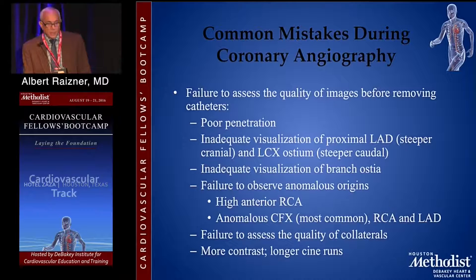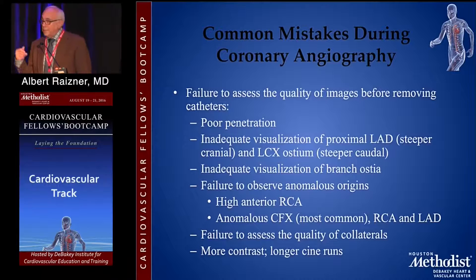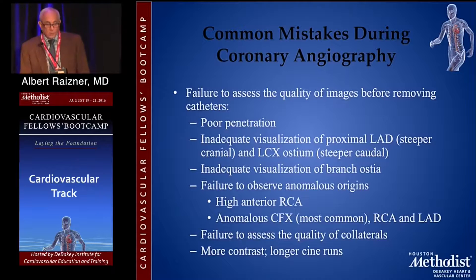There are also anomalous situations where you often miss findings. You might think the right coronary is occluded when it's actually arising high and anterior, requiring different catheters to find it. I've also seen many cases reported as occluded circumflex which were really anomalous, arising from the right coronary artery. The catheter that slid into the right coronary slid past the origin of the circumflex, so you never visualized it. It's important to assess collaterals as well.